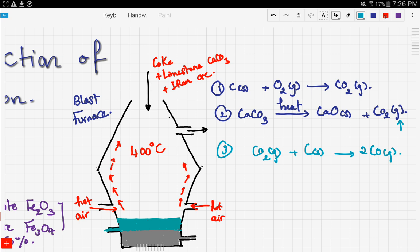Then the carbon monoxide starts to go up in the furnace and it acts as a reducing agent, reducing the iron ore. So this is the reaction that occurs now.